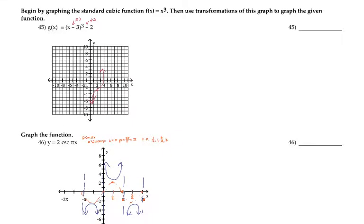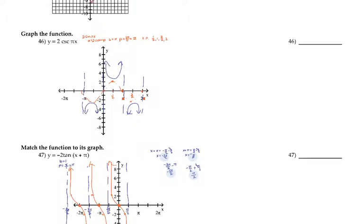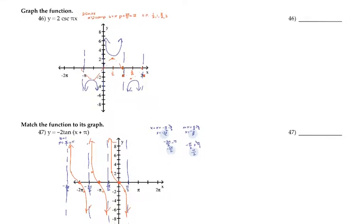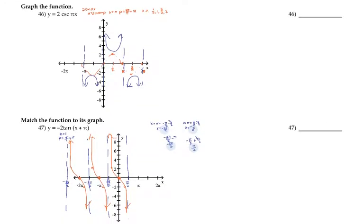Number 45 is the cubic function: moving to the right 3 and down 2, pointing up to the right and down to the left. For graphing sine, cosine, and tangent — you could get any of these: sine, cosine, cosecant, secant, tangent, or cotangent. You've got to know how to do all of them. For cosecant, I graphed sine first. A equals 2 is the amplitude. B equals pi, so the period is 2pi over B which equals 2.